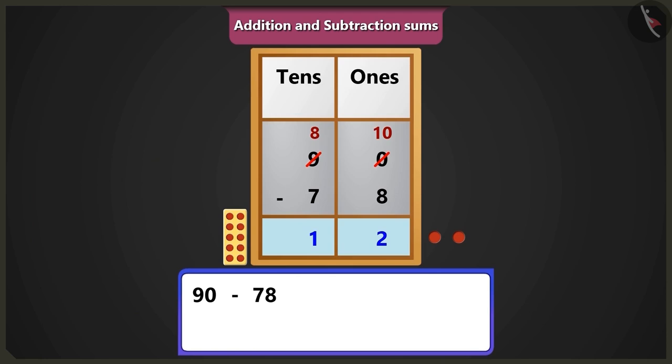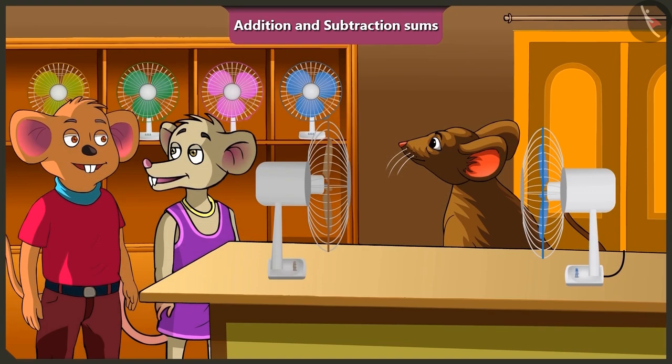So in this way, if we will subtract 78 from 90, then 1 ten and 2 ones means 12 rupees would be the balance amount. Oh wow, Chichi. Now you would buy a new fan and also save 12 rupees.